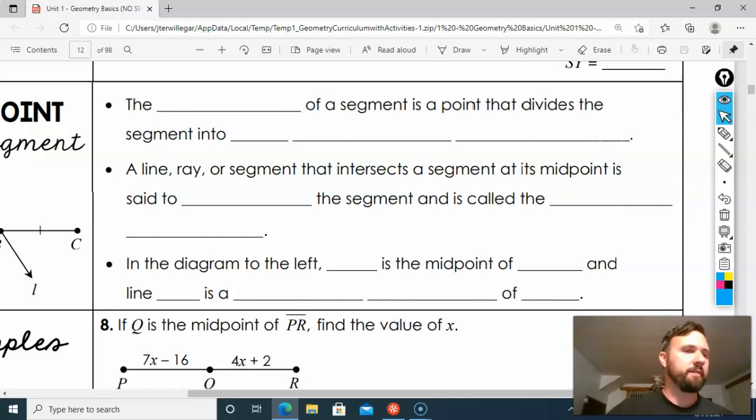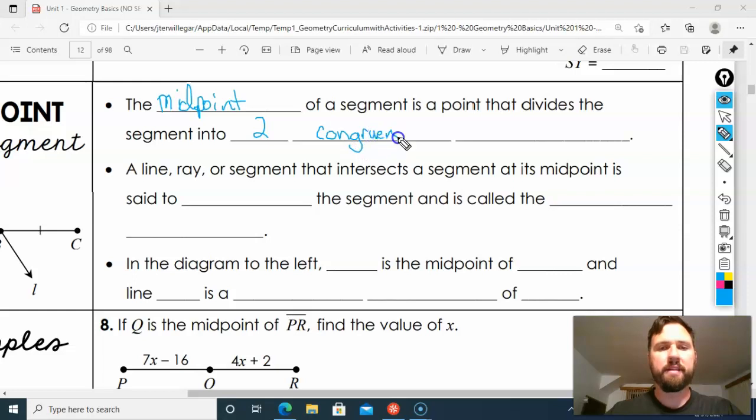So the blank of a segment—the midpoint. The midpoint of a segment is the point that divides the segment into two congruent segments, two parts with the same length. Right. Alright, now a line, ray, or segment that intersects a segment at its midpoint is said to bisect. Bisect means to cut in half.